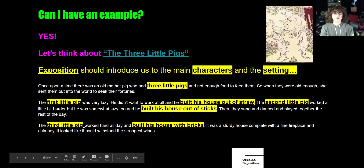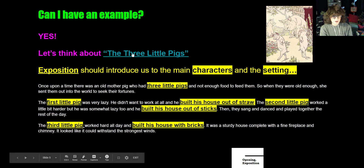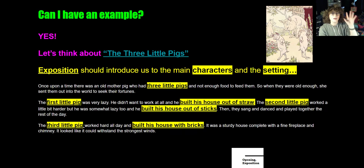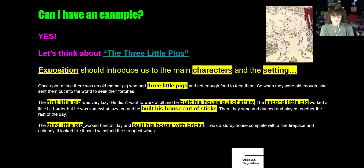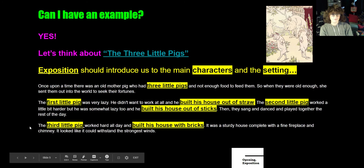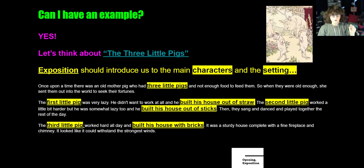We're going to go through an example together using the Three Little Pigs, so you can see how this works with another story, and then we'll apply it to Hatchet. The beginning of the story is the exposition, which should introduce us to the main characters and the setting. When we look at the opening of Three Little Pigs, we meet the three little pigs: the first with his house of straw, the second with his house of sticks, and the third with his house of bricks. The pigs are our main characters and their houses are the setting.